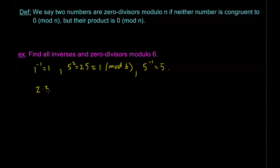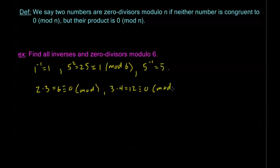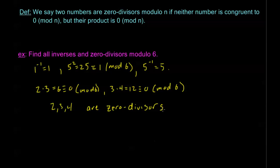So 2 times 3 is equal to 6, which is congruent to 0 mod 6. And 3 times 4 equals 12, which is congruent to 0 mod 6. So 2, 3, and 4 are zero divisors. There's actually an easy way to know which numbers have inverses for a particular modulus and which numbers have zero divisors, but I'm going to put that in the next video.